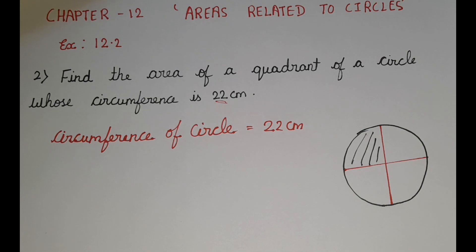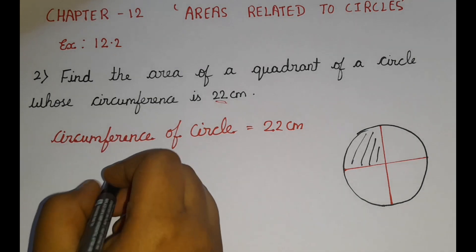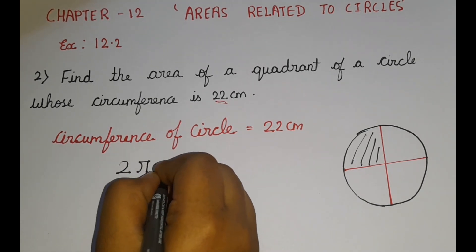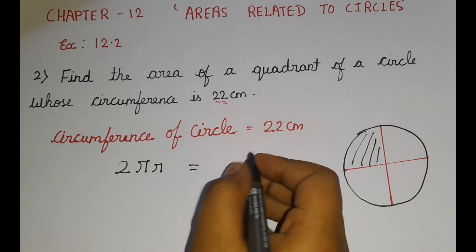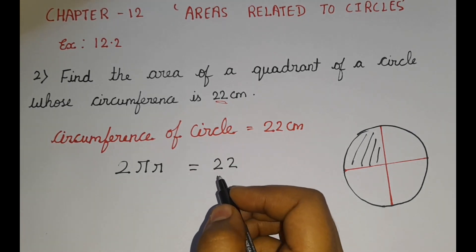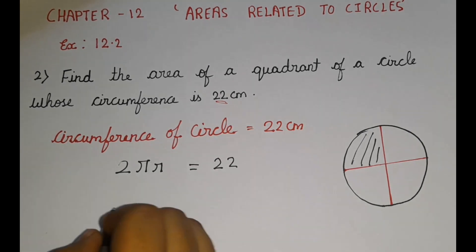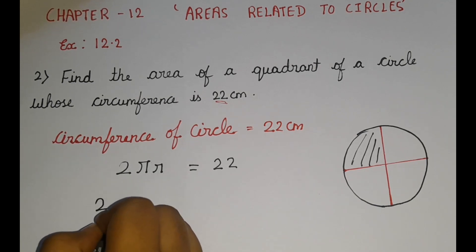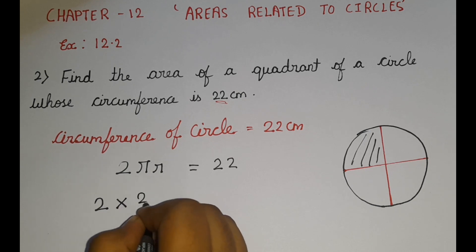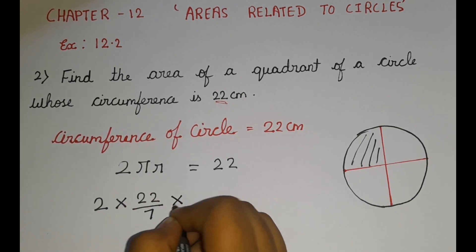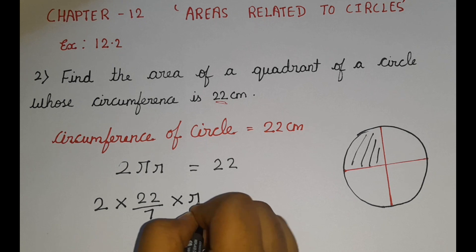The formula is 2πr, so 2πr = 22. Now let us substitute the values: we have 2, the π value is 22/7, and we don't know the radius, so let us write r.